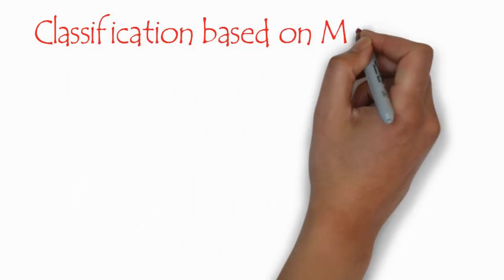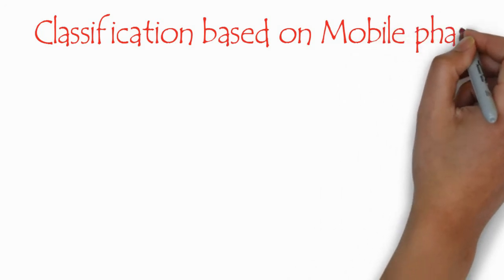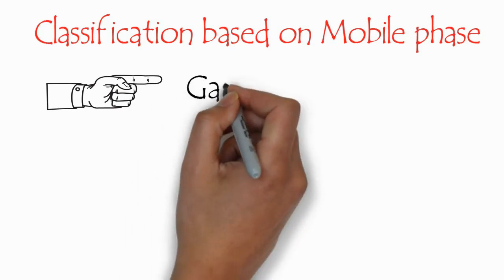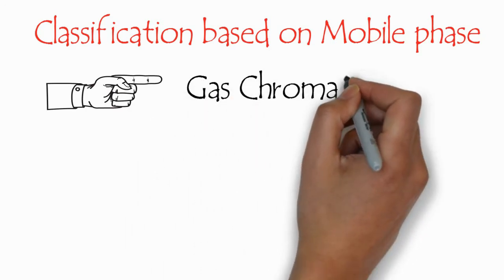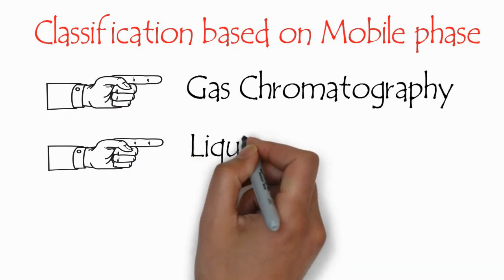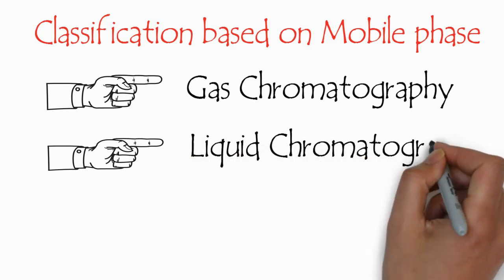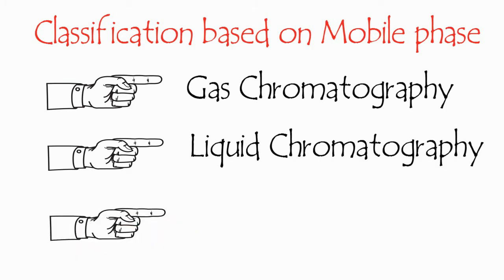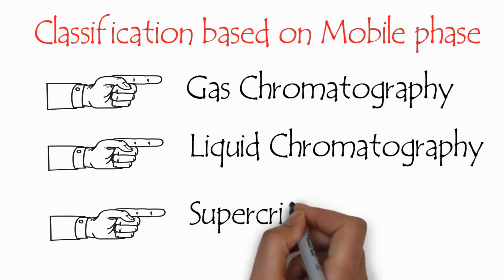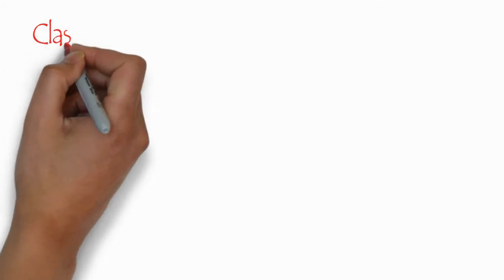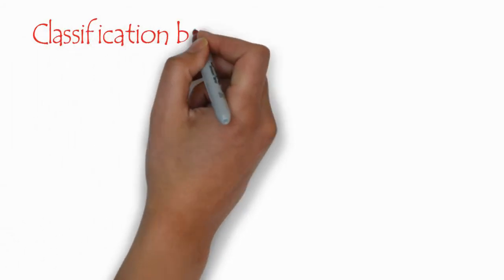The first type of classification is based on mobile phase. In this case we have three main classes of chromatography. The first one is gas chromatography, in which the mobile phase is a gas — normally different types of gases. The second one is liquid chromatography, in which the mobile phase is usually a liquid. And the third one is supercritical fluid chromatography, in which the mobile phase is a supercritical fluid.